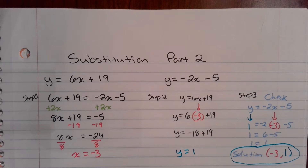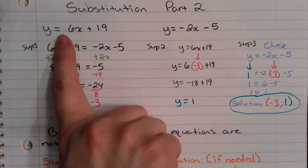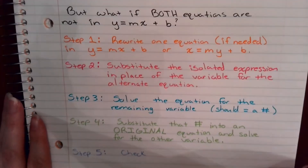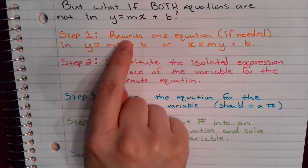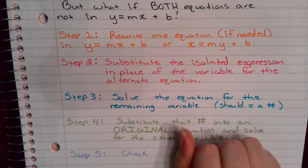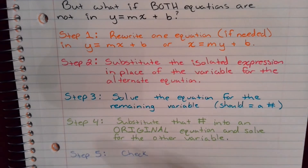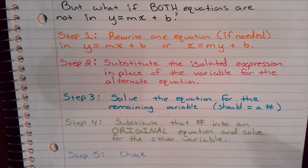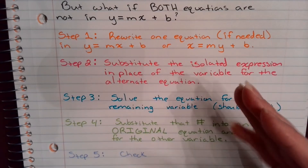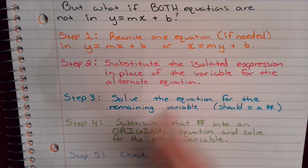That's the process when both equations are isolated to the same variable. But what if both equations are not in y = mx + b form? What if they're not both y equals? Step 1 is to rewrite one of the equations if needed. If one equation is already in y = mx + b form — or even x = ... form — you don't need step 1. You'd only rewrite if neither equation has an isolated variable.